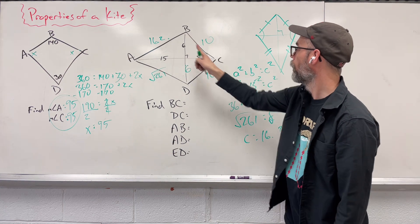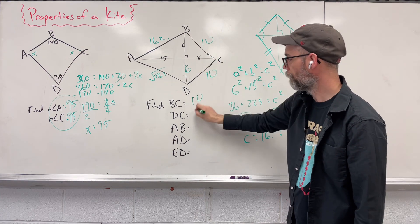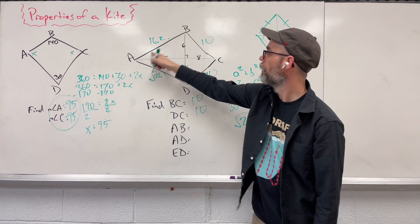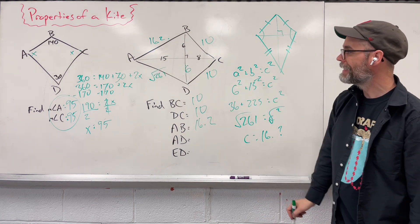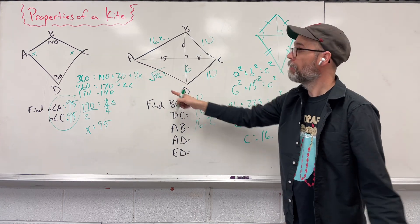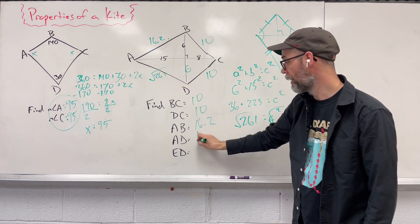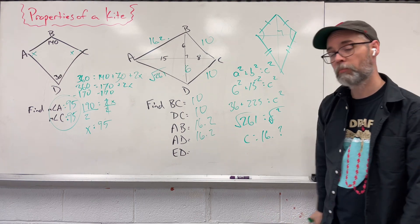BC. BC, we know as 10. DC, same thing, 10. AB, about 16.2. AD, radical 261 or about the same thing here, about 16.2.